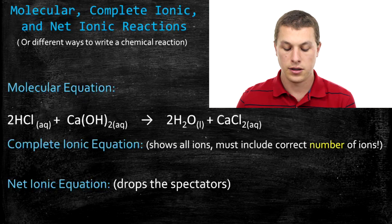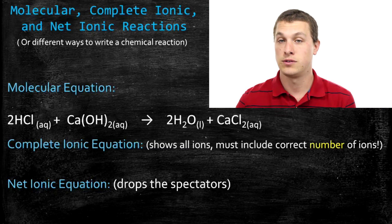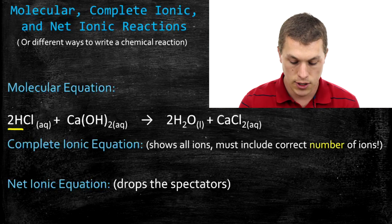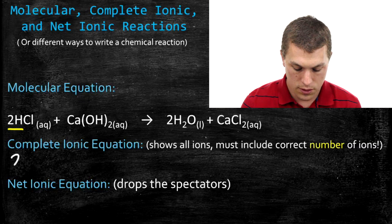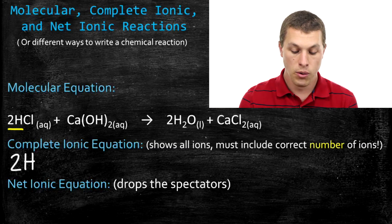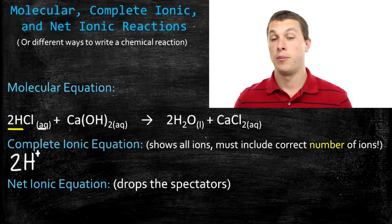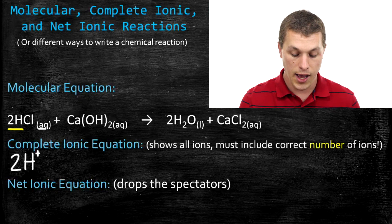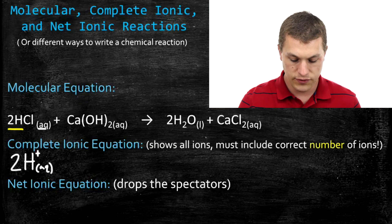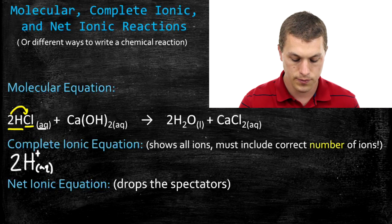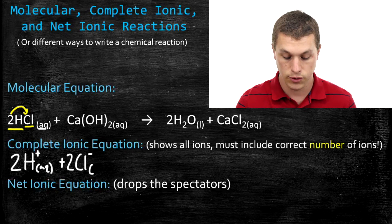We can write down the complete ionic equation by identifying all the ions those compounds split into, and writing down the correct number of each. Since there's a 2 in front of HCl, we actually have 2 hydrogen ions. So the first thing I write is 2 H⁺ aqueous — hydrogen always has a +1 charge, and since HCl was aqueous, it's aqueous here too. Now for chlorine: the 2 applies to both hydrogen and chlorine, so we have 2 Cl⁻ aqueous. Chlorine always has a −1 charge.